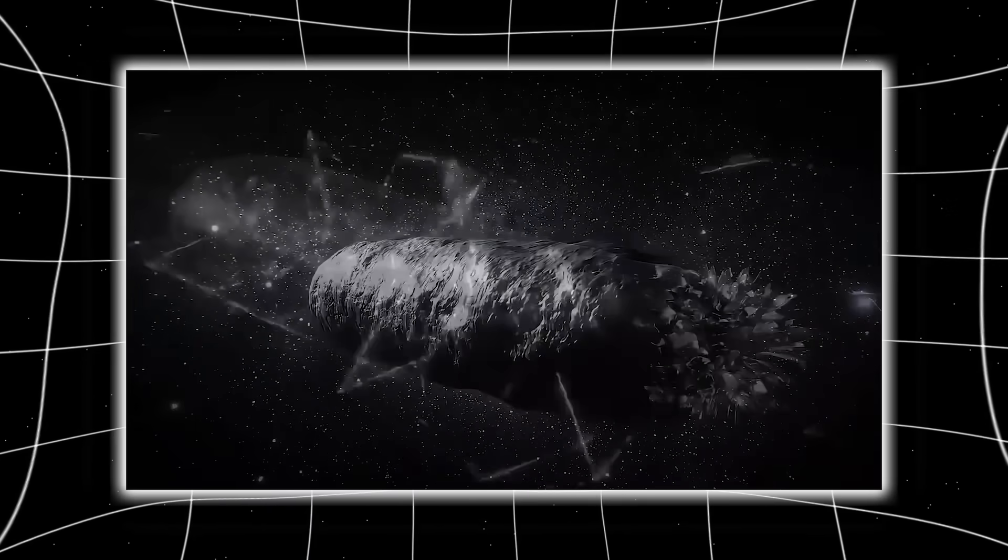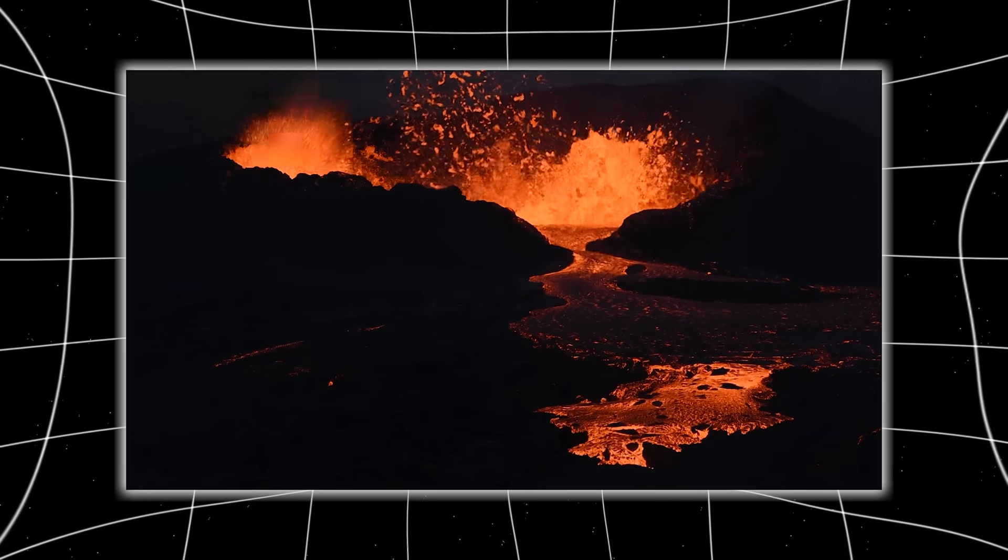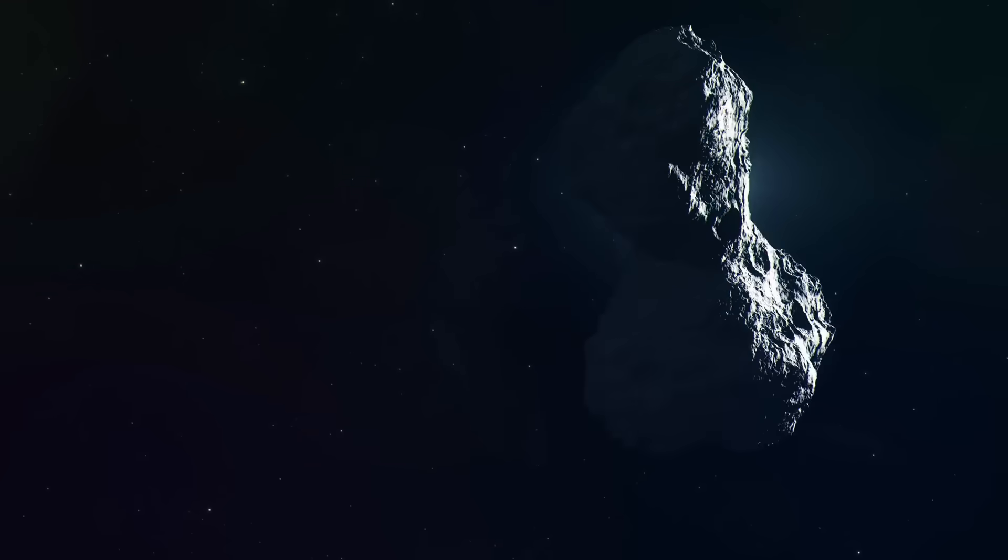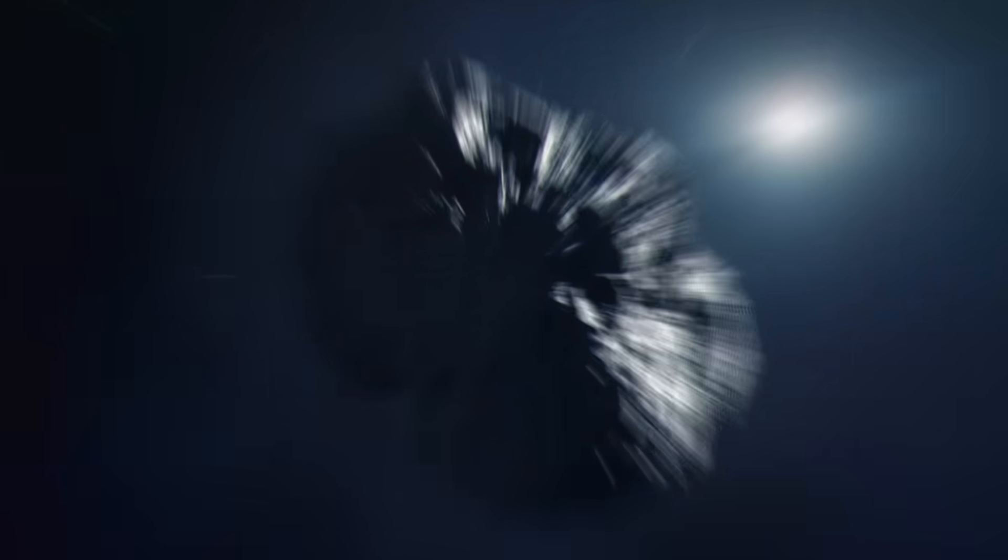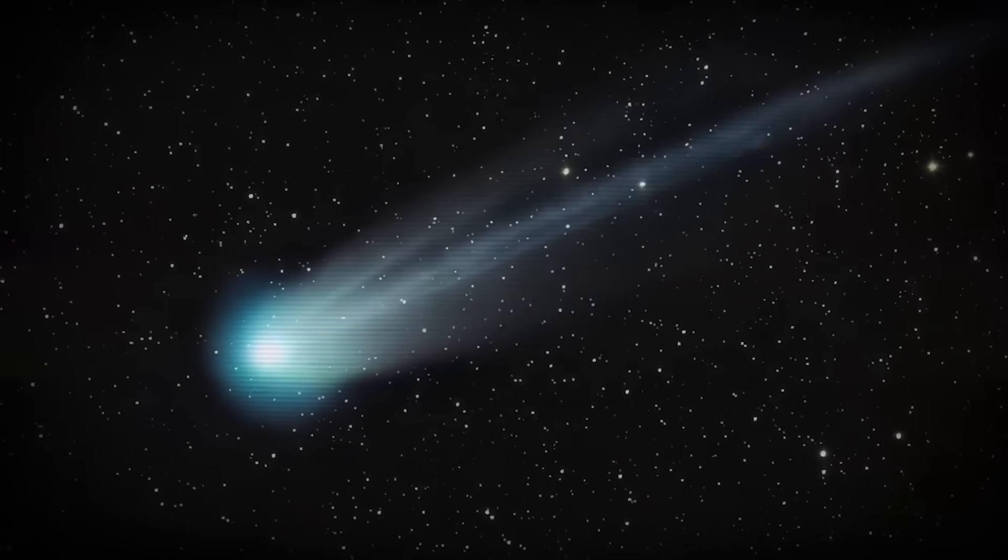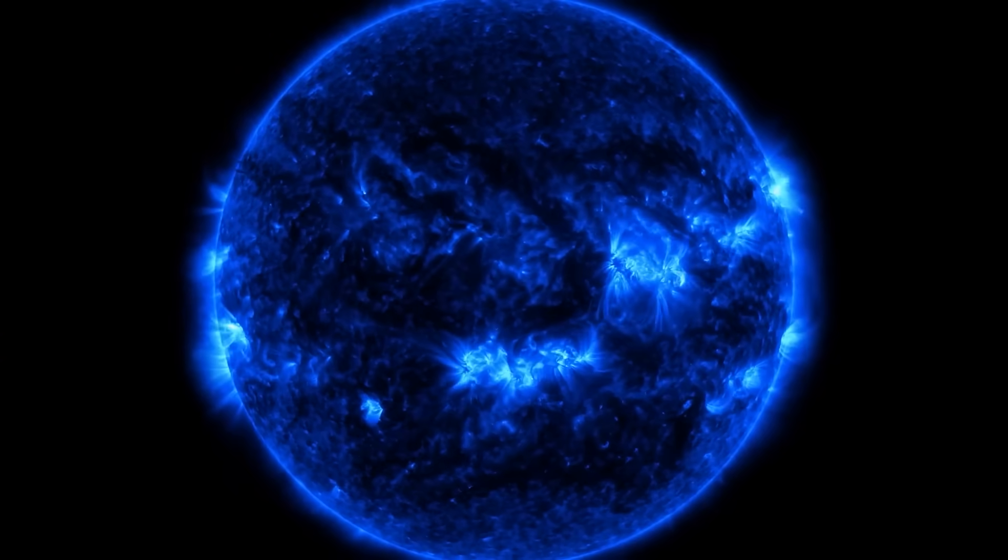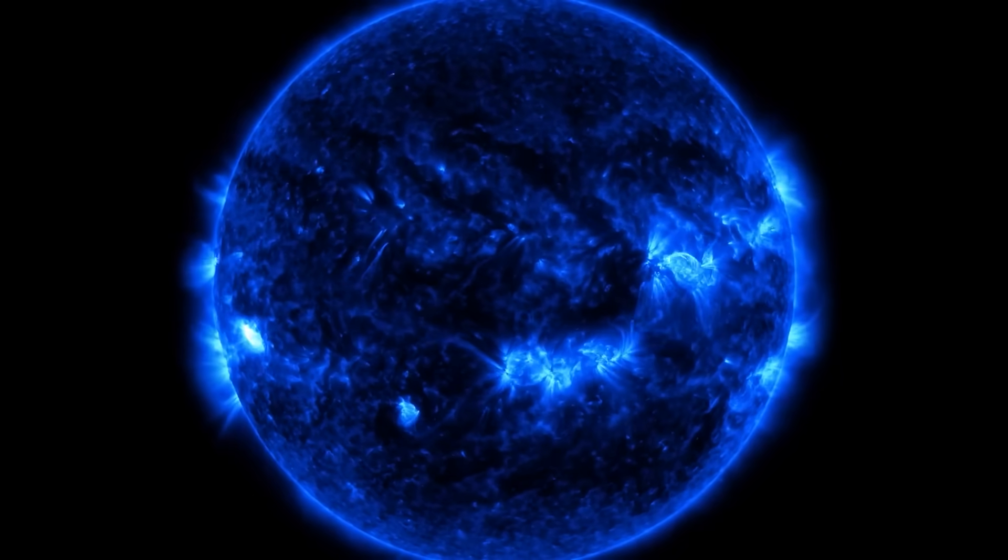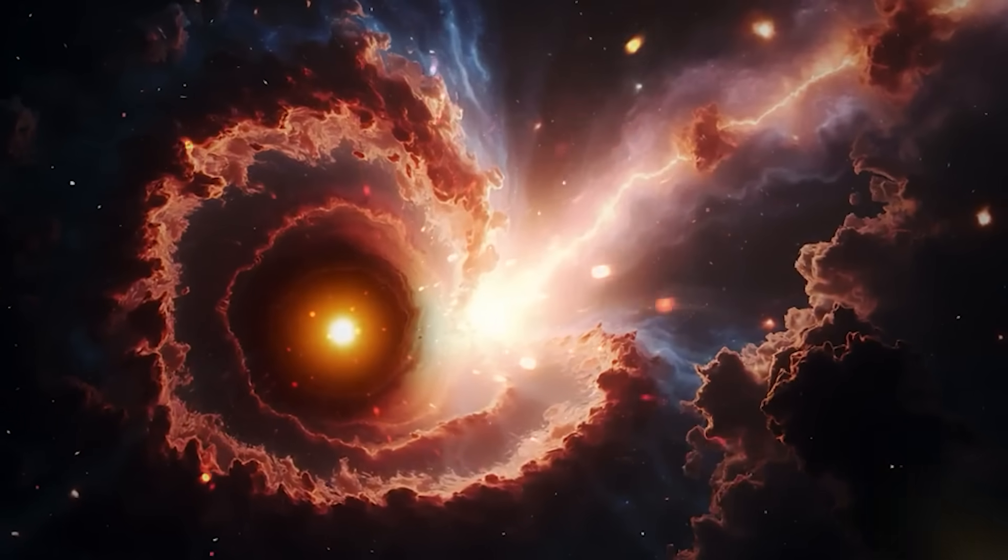Because even for a comet under solar stress, this jump is absurd, like a block of ice suddenly becoming a volcano. Something was happening inside Atlas. Something building. Something pressurizing. And then, the comet began glowing blue, an unnatural color for outgassing dust. Nature does not glow blue unless something very specific and very hot is happening. Astronomers knew the moment of truth was coming.